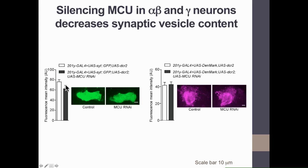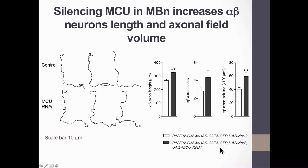We performed single-neuron analysis using the photoactivatable form of GFP, C3PA-GFP, which allowed us to activate single mushroom body neurons and track their axonal projections. We started with alpha-beta neurons, since they are formed during pupation — the phenocritical period in which mitochondrial calcium entry is required for normal memory. Upon MCU silencing, alpha-beta neuron axonal projections were longer and they occupied a bigger axonal field volume. This observation was specific to alpha-beta neurons, as the same analysis in gamma neurons showed no change.